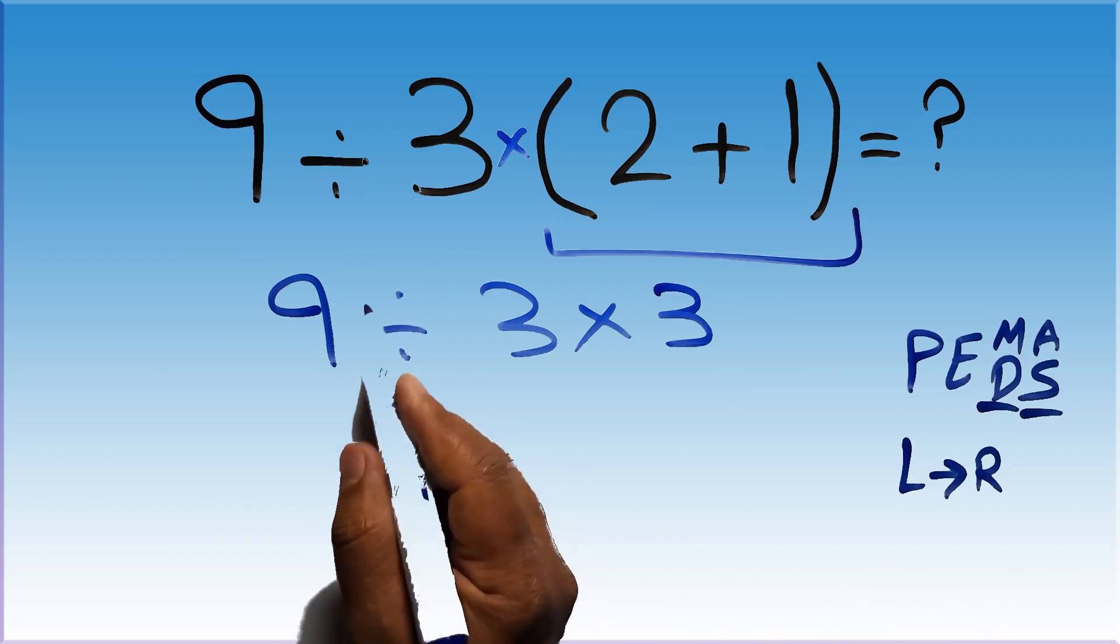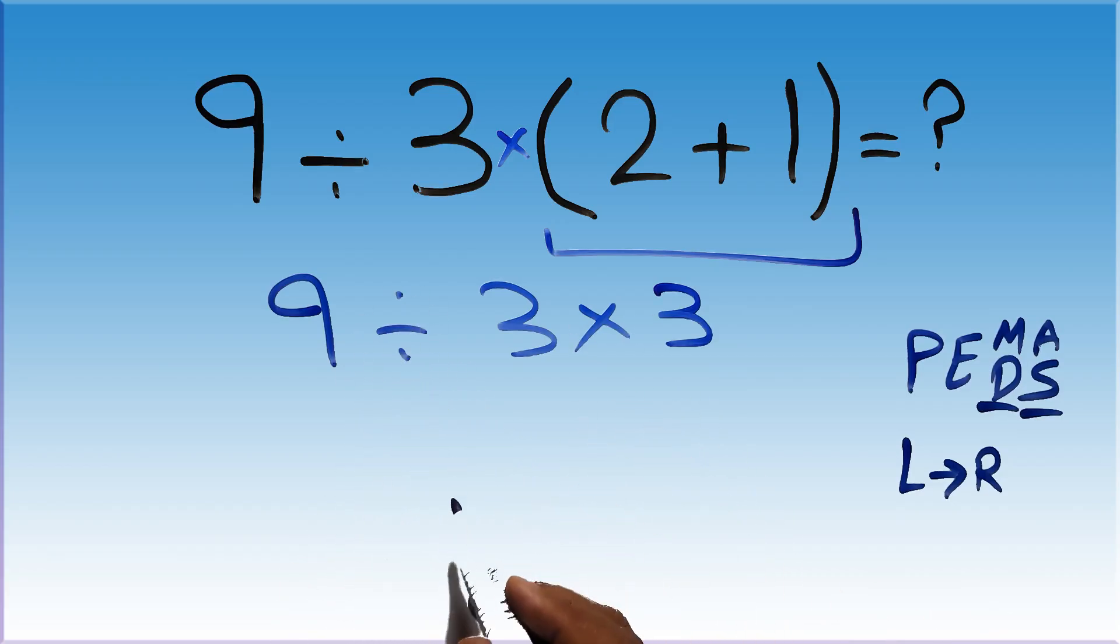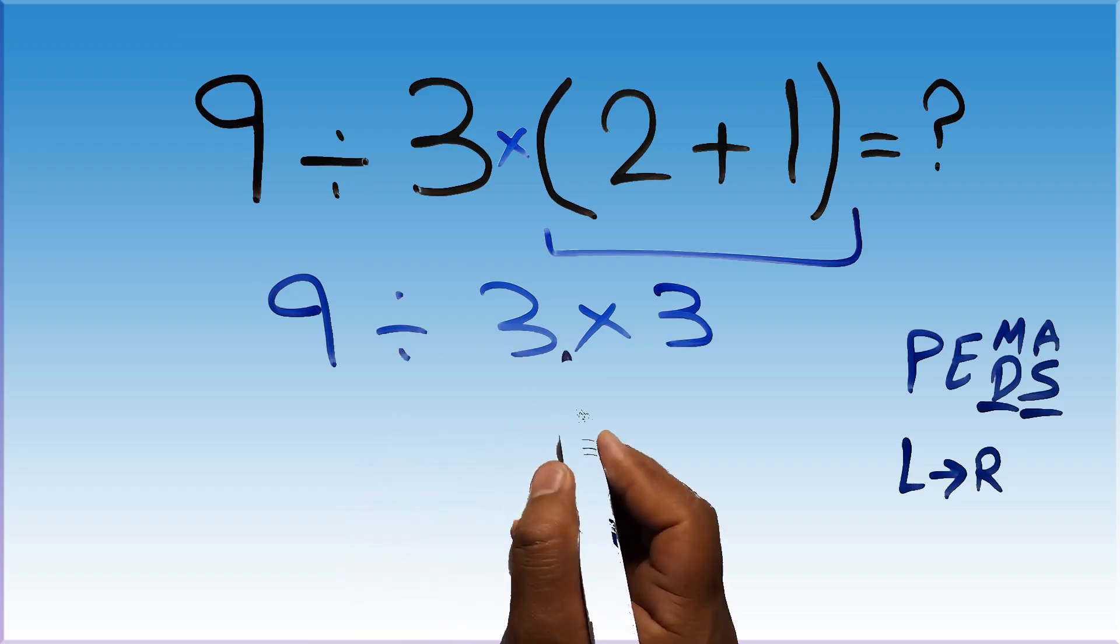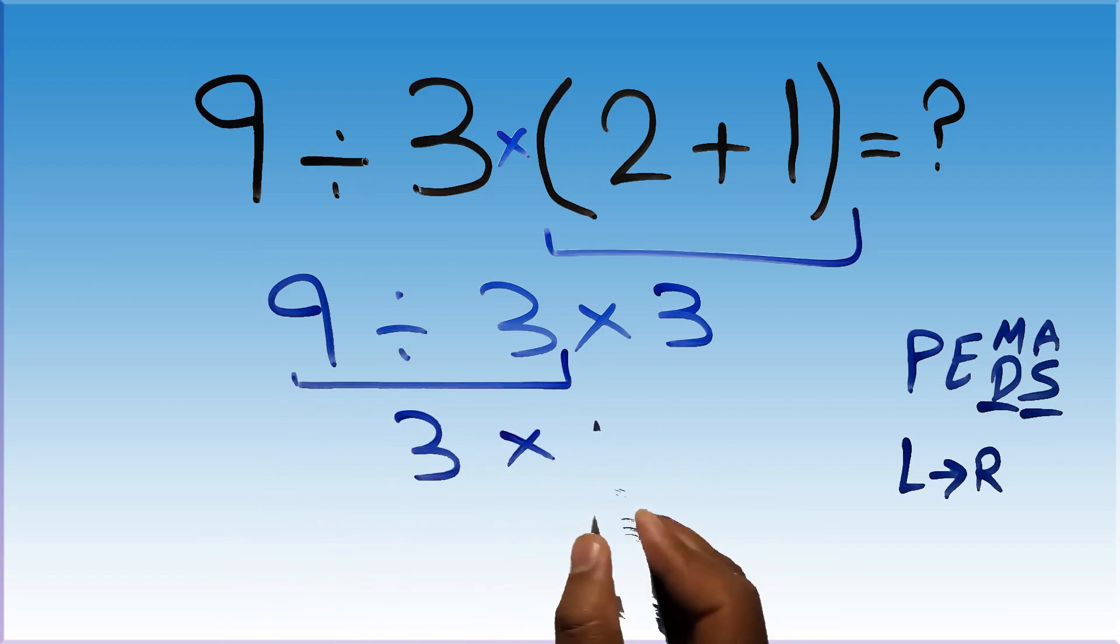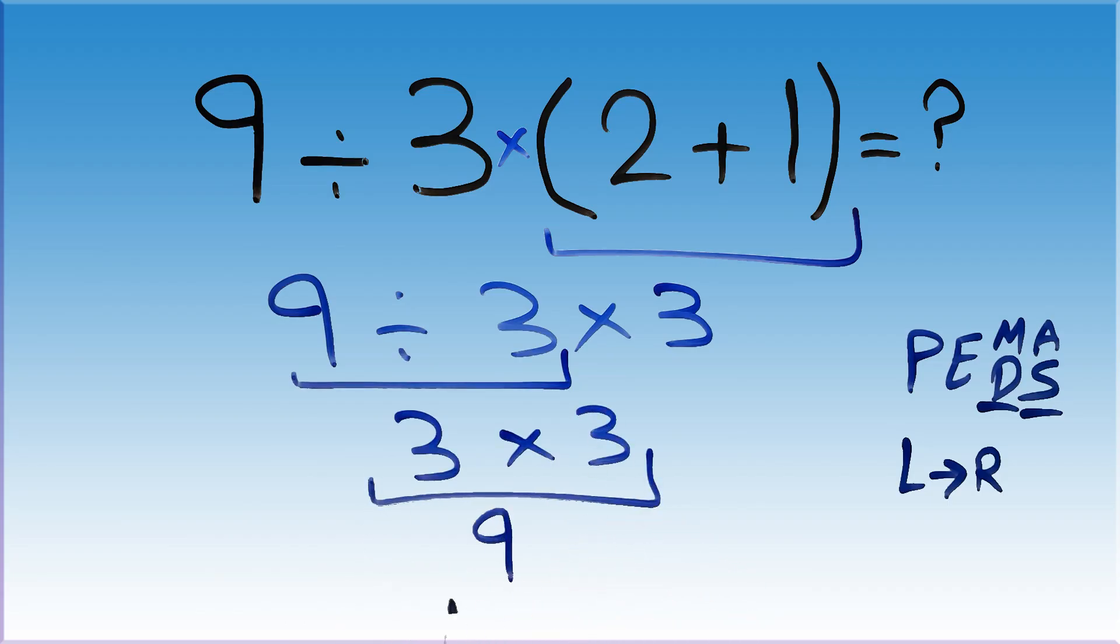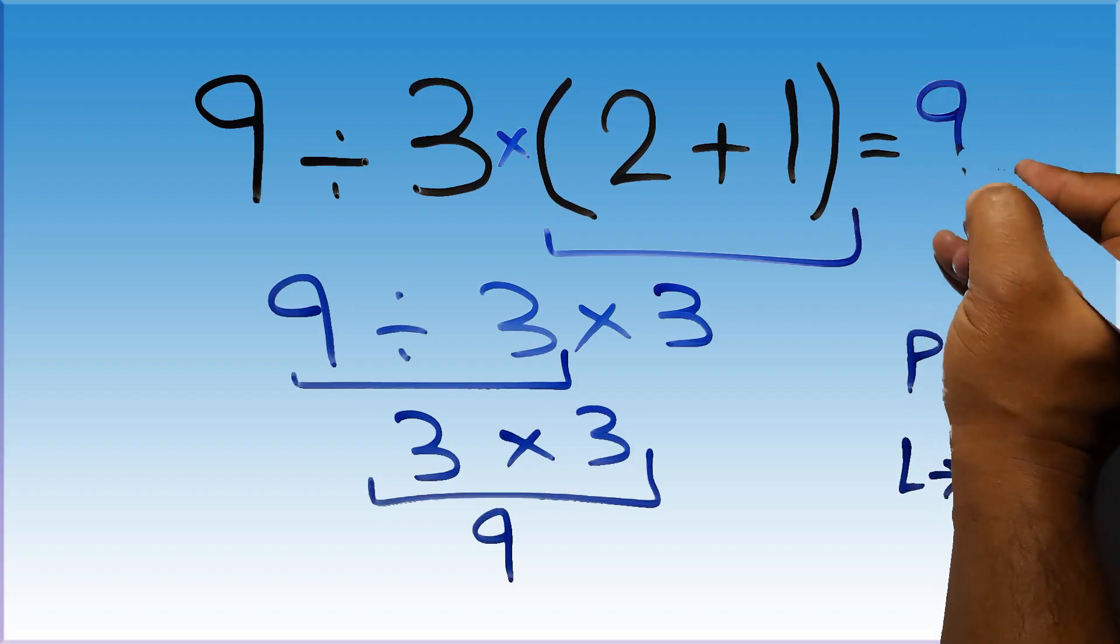first we have to do this division, then this multiplication. 9 divided by 3 gives us 3, and 3 times 3 is just 9. And this is our final answer to this problem. The correct answer is 9.